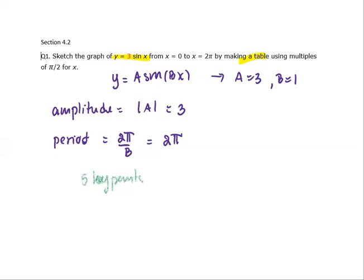The five key points come from four equal subintervals. That means for the length of one cycle, we break it up into four equal subintervals.